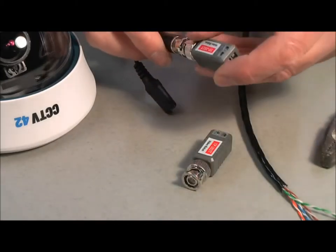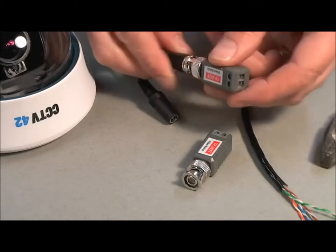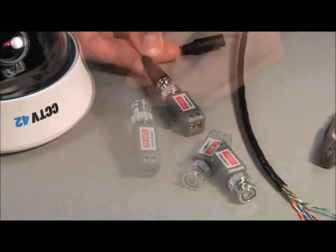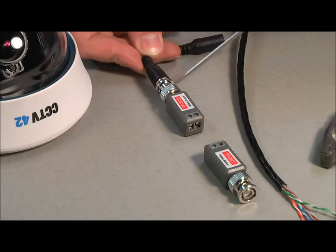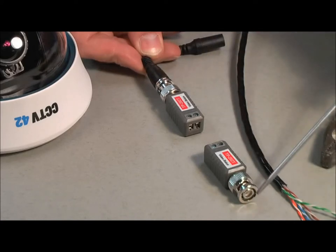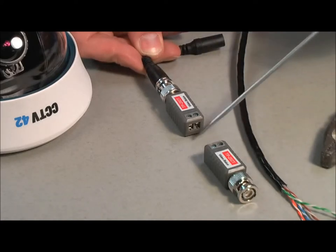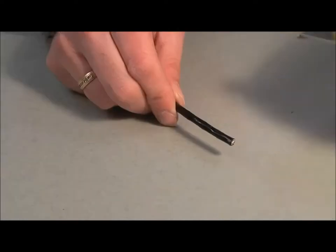Here we can see how the balun joins the BNC plug at the camera end. This shows an imaginary connection or link between the camera through the balun to the other balun plugged into the DVR with Cat5 cable in the middle.